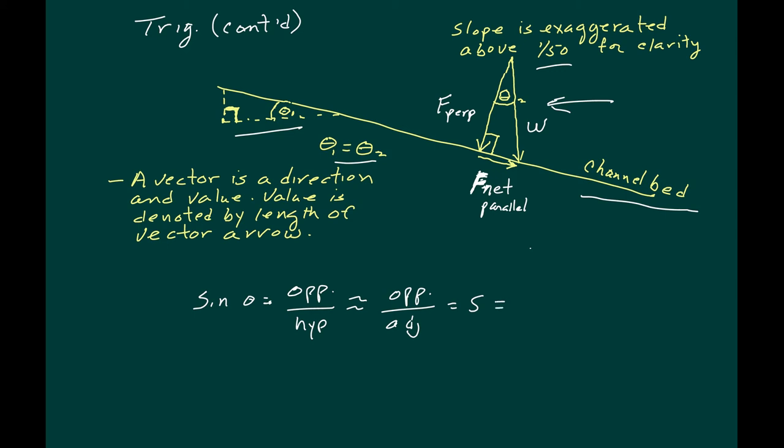And in this case for this triangle, f sub net is the vector on the opposite side and w is the adjacent. So rearranging this, f net equals slope times weight.